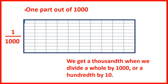If we have one part out of a thousand, we have one-thousandth. We've still got this rectangle split into hundredths, but you can imagine each of these little rectangles split into ten pieces, which would mean that the rectangle was split into a thousand pieces. We can't really show this, because you wouldn't be able to see anything — you probably can't even see this tiny little blue sliver showing one part out of a thousand. So we get a thousandth when we divide a whole by a thousand, or a hundredth by ten. Each of these little rectangles shows one-hundredth, and if we have just a tenth of that, we have a thousandth.